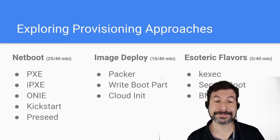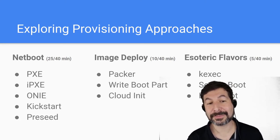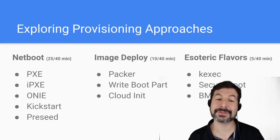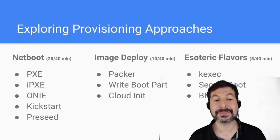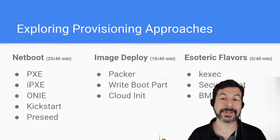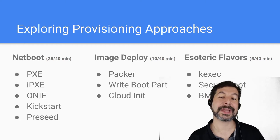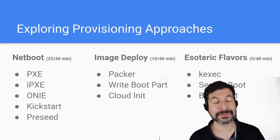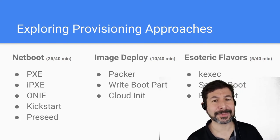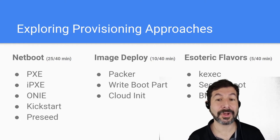In this Racken-focused talk, I can tell you we do that — we try to make it easy, we do it all as infrastructure as code. So exploring provisioning: most people when they think of pixie use it as a proxy for netboot. You'll hear pixie, iPXE, ONIE (for switching), kickstart, pre-seed — all very common. Image deploy and esoteric flavors are in the second talk — we'll cover Packer, writing boot partitions, cloud-init, secure boot, BMC, and even Raspberry Pi as a special addendum.